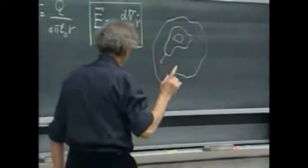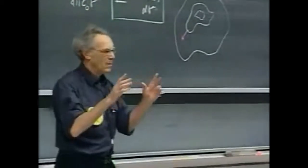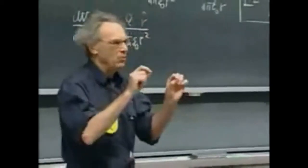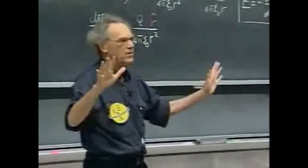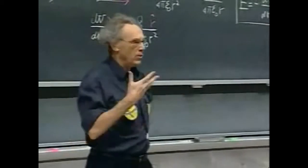So imagine that I am somewhere in space at position P. At that position P there is a potential, one unique potential, V of P. That's a given. And there is an electric field at that location where I am.